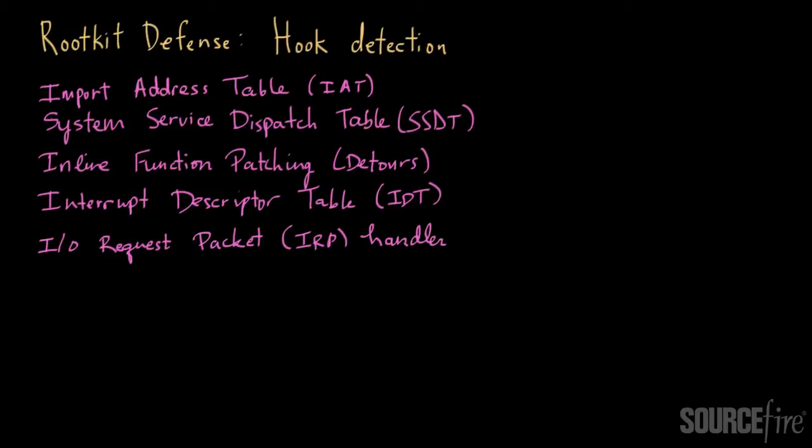Hooking is a popular technique that a lot of rootkits use to camouflage themselves on the system. What hooking basically involves is the idea of having the rootkit modify some aspect of the execution path so that it can interfere with the results. Typically, this is done by changing an address to which some function points so that instead of pointing to a legitimate function, it points to malicious code owned by the rootkit.